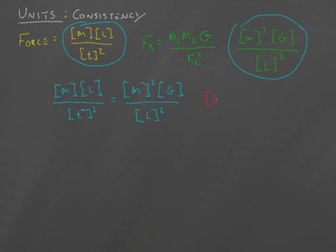Then we see that G, if we cancel the mass term, we multiply the L squared by L, so that's going to be up on top. So we have an L cubed now, and then we're still dividing by T squared, and we're also dividing by a mass. So mass times time squared.